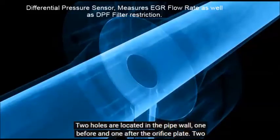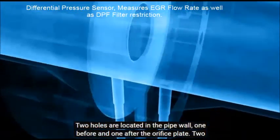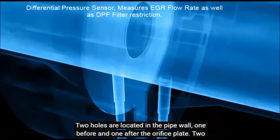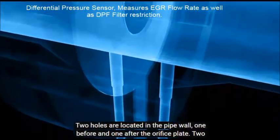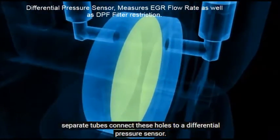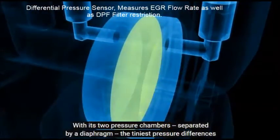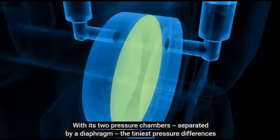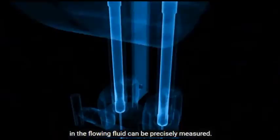Two holes are located in the pipe wall, one before and one after the orifice plate. Two separate tubes connect these holes to a differential pressure sensor with its two pressure chambers separated by a diaphragm. The tiniest pressure differences in the flowing fluid can be precisely measured.